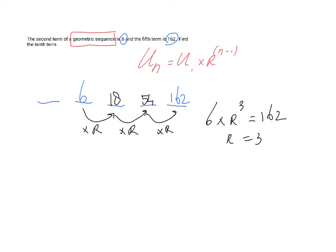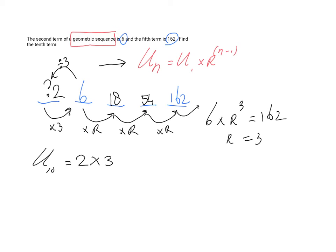But that's not what they're asking. They're asking: find the tenth term. I'll do it slightly differently. I will do u10 equals — using the formula — u1. Now what is the first term? We know that r is 3, so what times 3 equals 6? That's 6 divided by 3, which is 2. So term 1 is 2. So you get u1 — which is 2 — times r, which is 3, to the power 10 minus 1, so to the power 9. If you put it in your calculator, you're going to get 39,366.